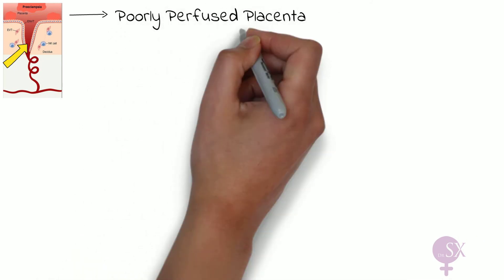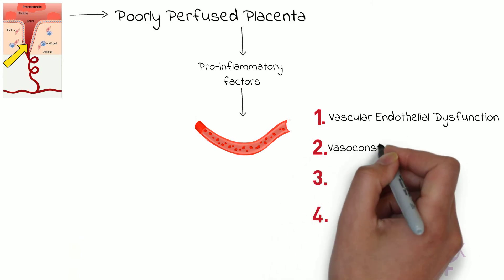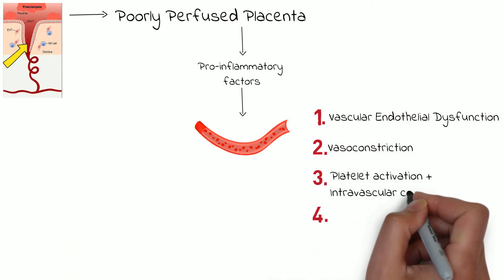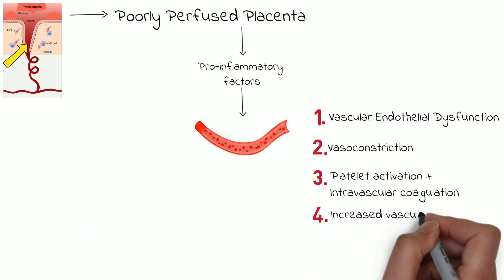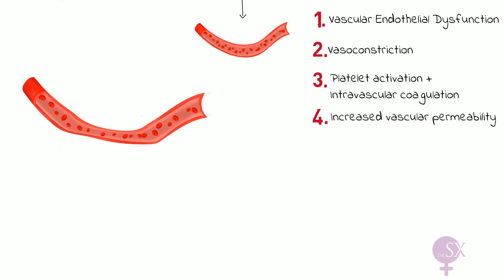This poorly perfused placenta starts to secrete pro-inflammatory factors which enter the maternal circulation and have various effects on maternal blood vessels, including: vascular endothelial dysfunction, vasoconstriction, platelet activation and intravascular coagulation, and increased vascular permeability. These effects help explain the presenting signs and symptoms of preeclampsia and its possible complications. Specifically, the pro-inflammatory factors affect the endothelial cells lining the blood vessels, resulting in endothelial cell dysfunction.